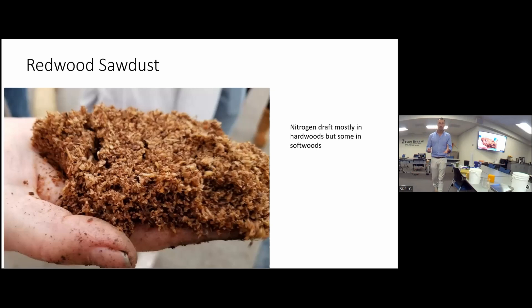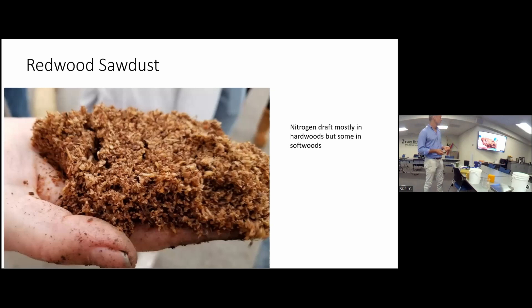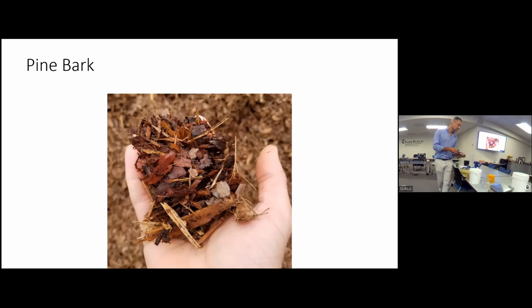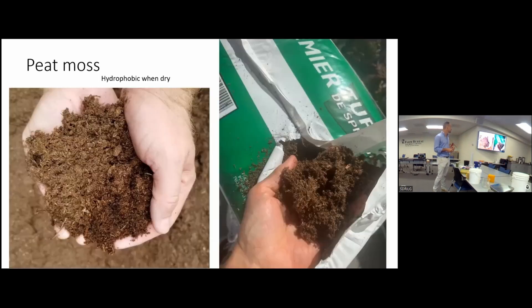Nitrogen draft means that as you make your mix, microbial activity will fix the nitrogen that is available, so it won't be available for the plants. It's common at the time of mixing to add some source of nitrogen to compensate for the draft. Pine bark has really big pieces, so it's typically not used by itself but mixed with another material like peat or coco coir. The peat provides the spongy behavior, while bark or perlite provide the empty, airy space.